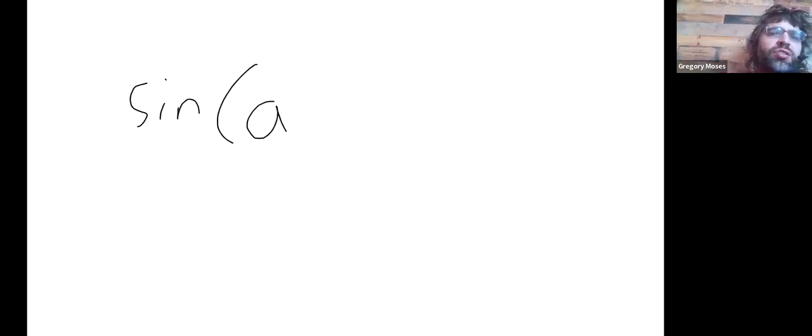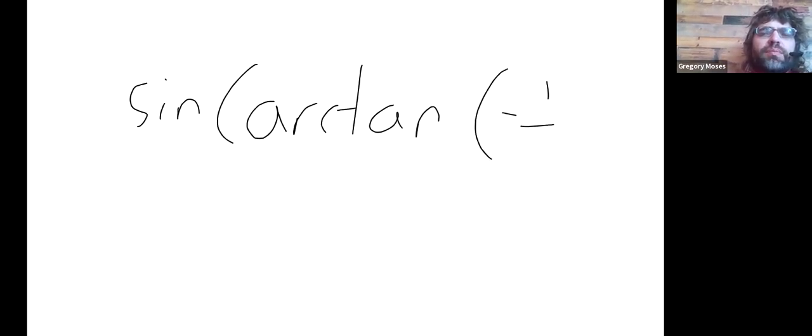In this video, we'll present a method for finding compositions of trig functions and inverse trig functions when the outer and inner functions don't match. That is to say, when we have something like the sine of the arc tangent of negative one-seventh.